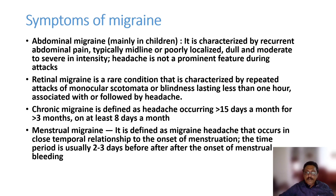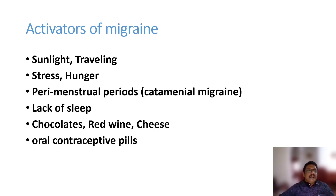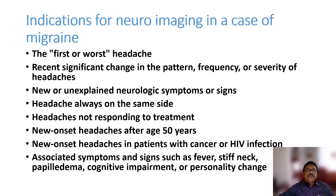Menstrual migraine is associated with menstrual periods; many female patients have progressive or persistent headache throughout the menstrual period that does not respond to standard tablets. Triggers of migraine include sunlight, travel, stress, hunger, perimenstrual periods, lack of sleep, chocolates, red wine, cheese, and oral contraceptive pills.